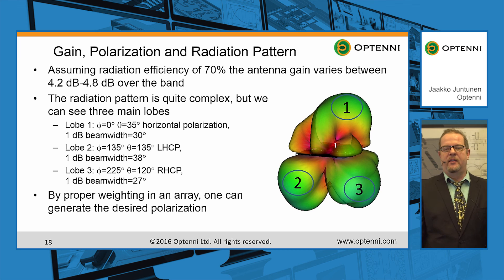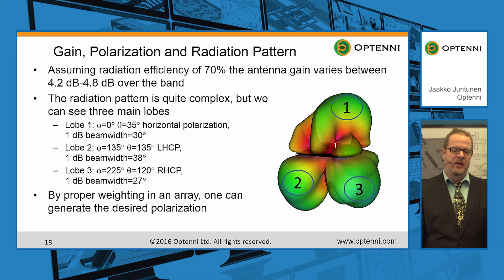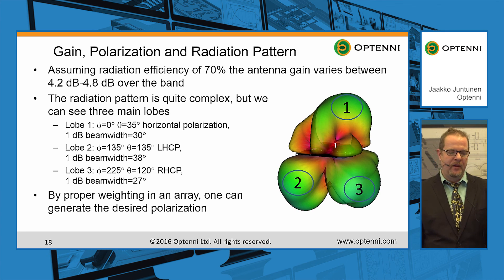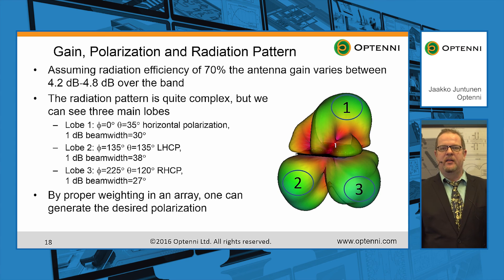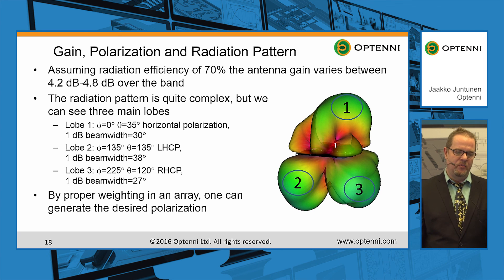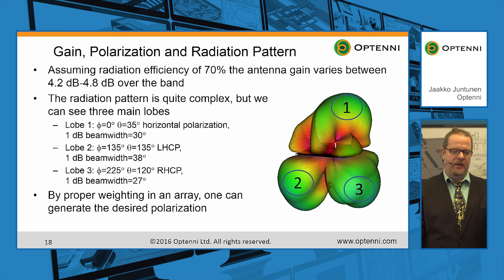We then calculate the radiation patterns and analyze them. We see clearly three distinct lobes and can analyze the polarization and, for example, the 1 dB beam width for each lobe. There are three lobes: one with linear polarization and two with circular polarization. By proper weighting, if we use this antenna in an array, we can generate any desired polarization.